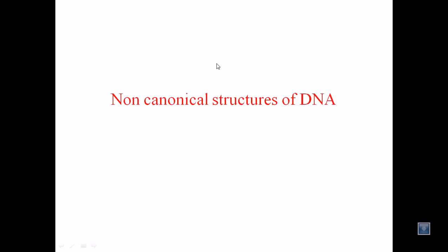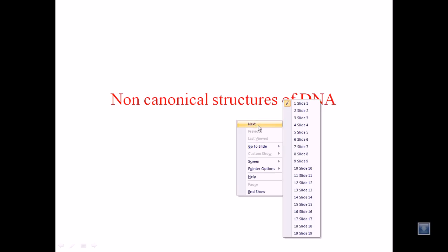The driving force for having different varieties of DNA structure is the presence of different types of sequences — it is the DNA sequence that determines the exact structure. Specific DNA sequences and sequence motifs drive these structural features. They may be repeated, inverted, mirror repeats, or arranged in different ways. Direct repeats of polynucleotide sequences like poly-G, poly-A, or poly-T give rise to different non-canonical structures such as cruciform structures, H-DNA, quadruplex DNA, triplex DNA, and slipped DNA.